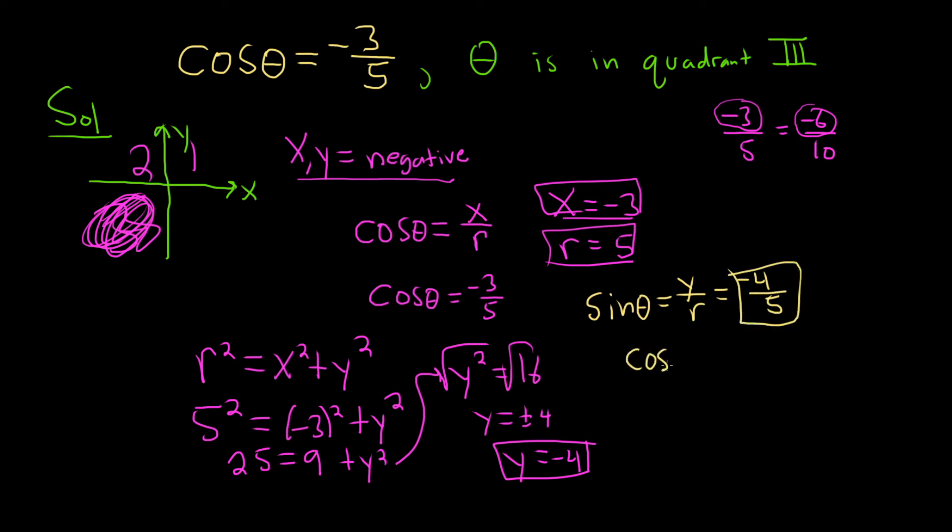Cosine of theta, that's given to us already in the problem. That's negative 3 over 5. So that's one free answer that they give us in the problem. The tangent of theta is equal to y over x. So in this case, it'll be negative 4 over negative 3. So that's just 4 over 3.